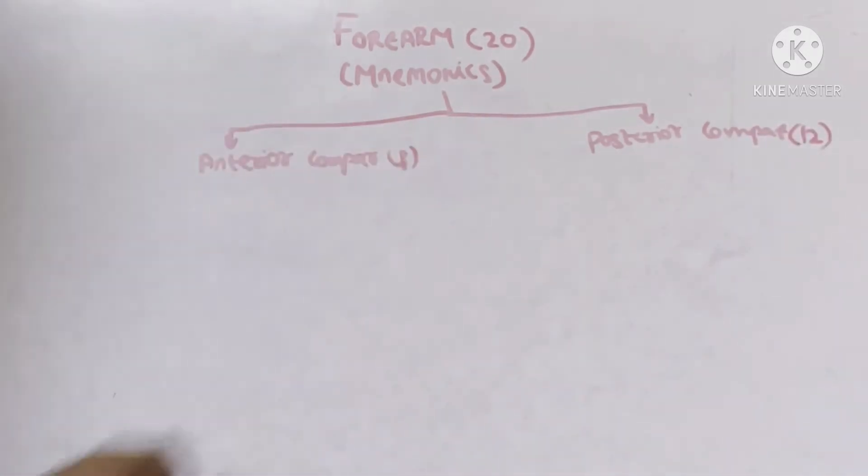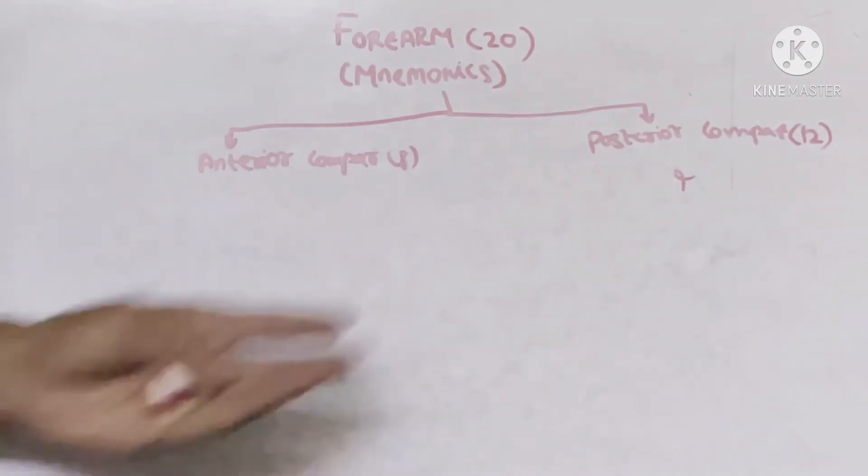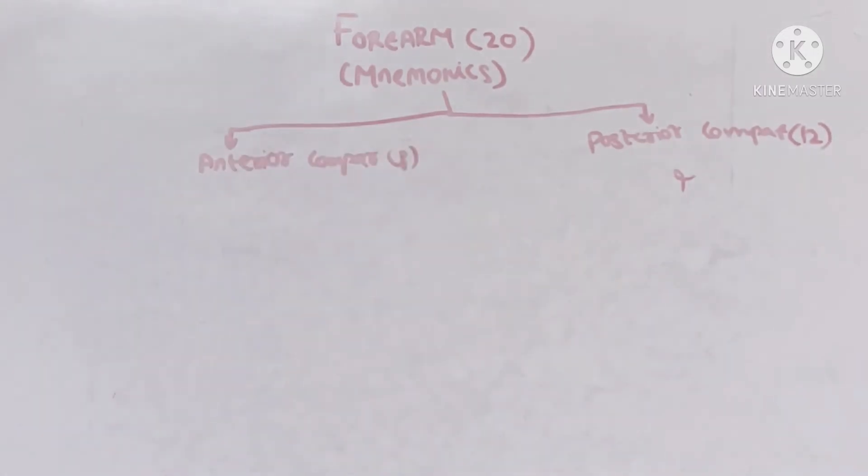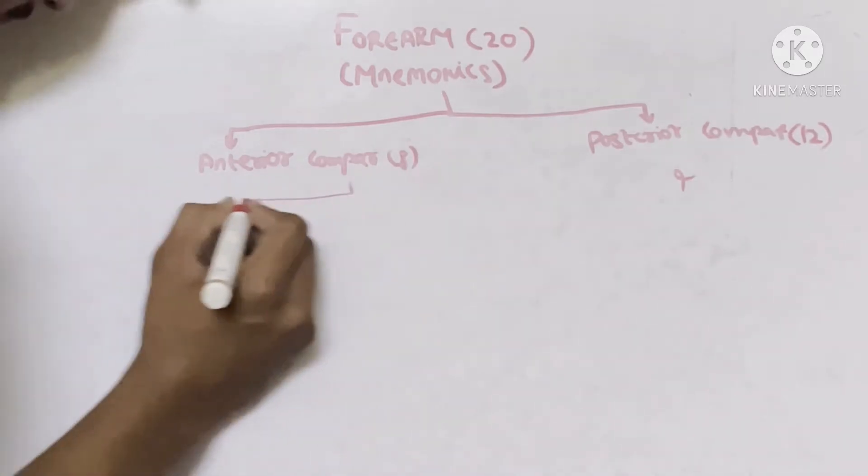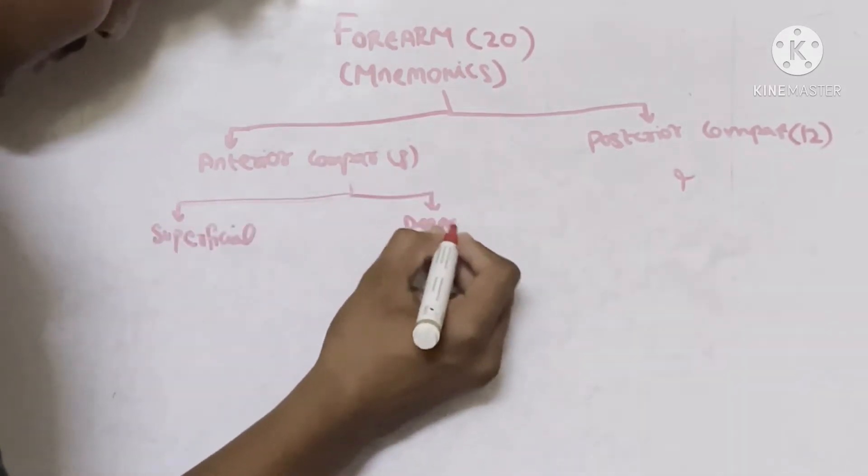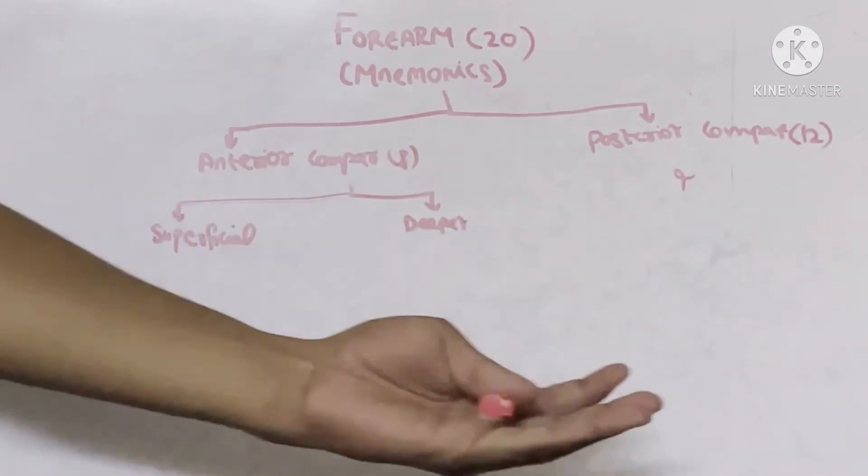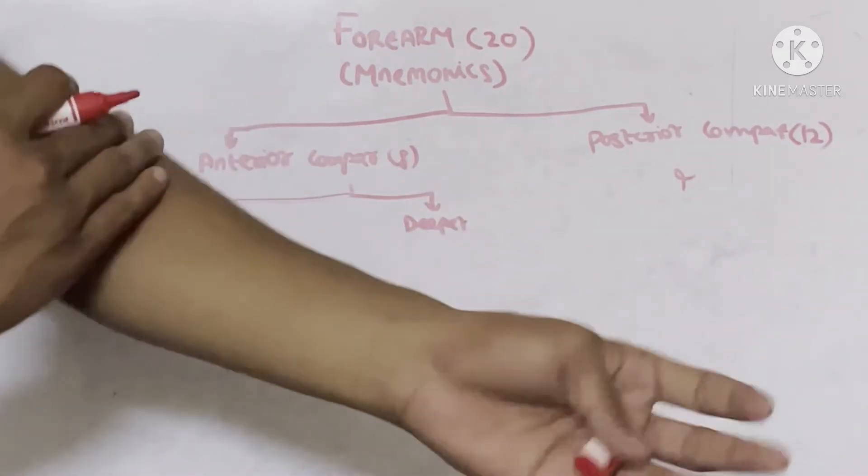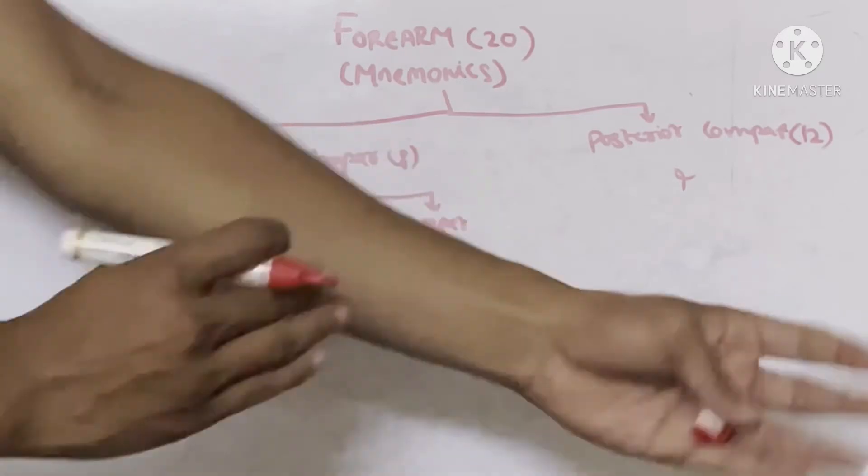These 12 muscles will be discussed in part 2 of this video and we will be discussing about 8 muscles of this. This 8 muscles can be further divided into superficial muscles and deeper muscles. Superficial muscles are the muscles - this is anterior compartment, this is posterior compartment.